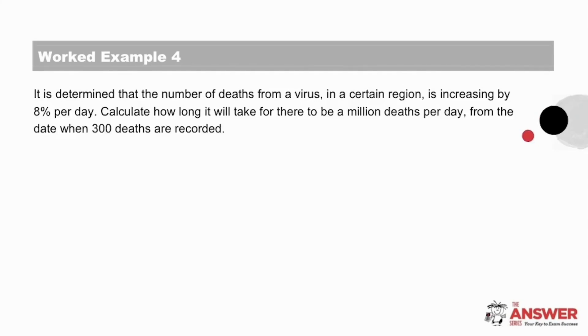Let's look now at example four. We'll have a read-through first and then slow down to see what we are given and what we have been asked to calculate. So a read-through first. It is determined that the number of deaths from a virus in a certain region is increasing by 8% per day. Calculate how long it will take for there to be a million deaths per day from the date when 300 deaths are recorded.